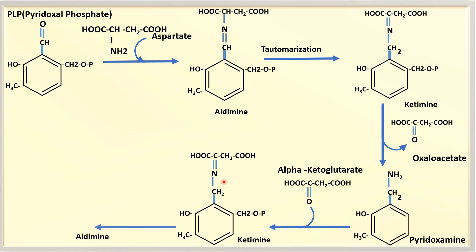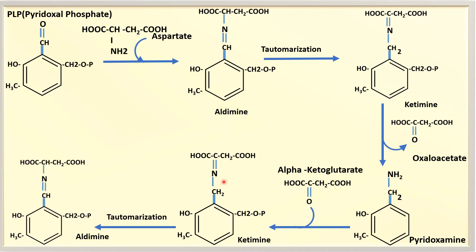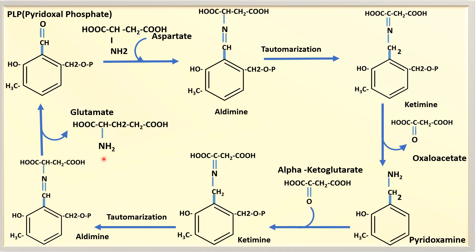This ketimine also undergoes tautomerization to form an aldimine again. Then there is release of the product glutamate, and regeneration of pyridoxal phosphate. So the entry of the first substrate and release of the first product is followed by entry of the second substrate and release of glutamate — this is the ping-pong bi-bi mechanism, involving aldimine and ketimine formation along with tautomerization, transferring the amino group from aspartate to alpha-ketoglutarate.